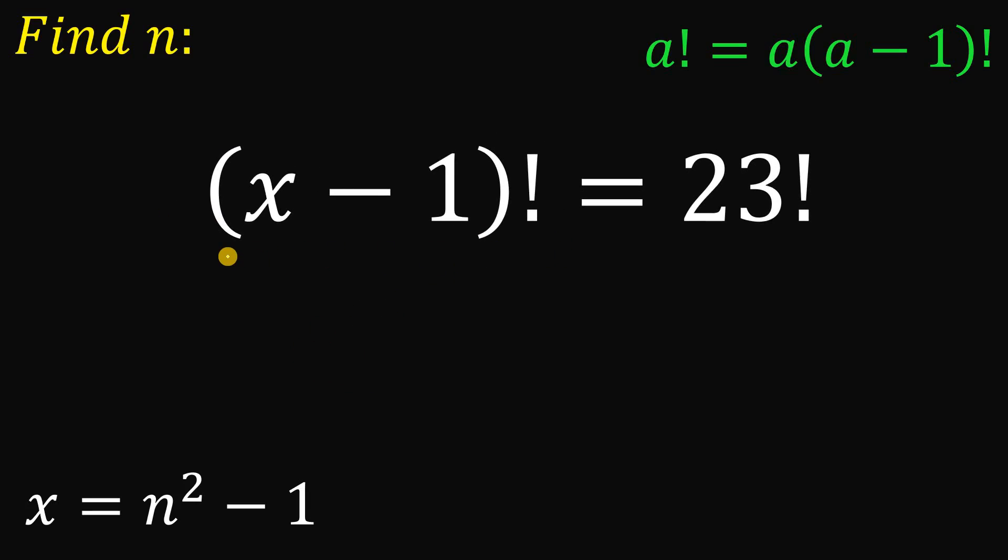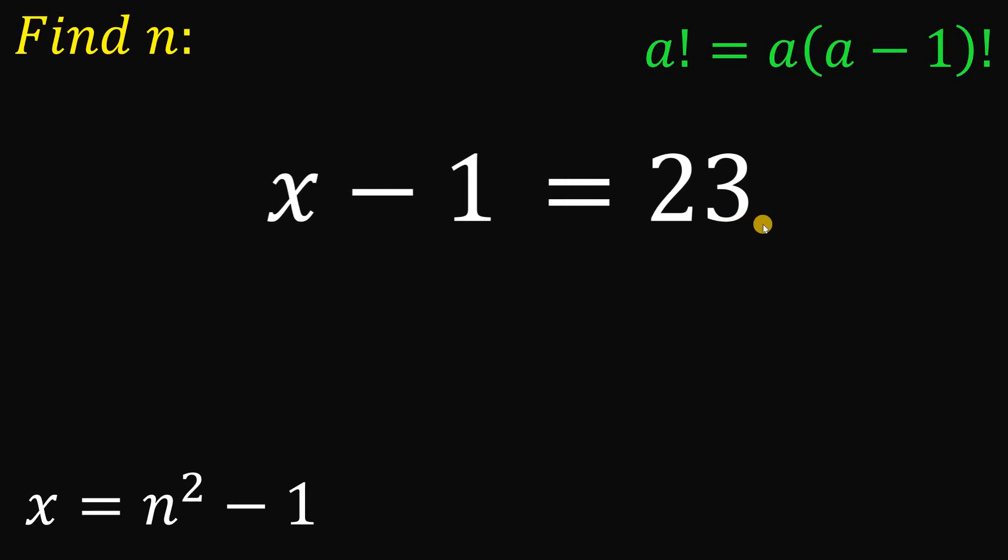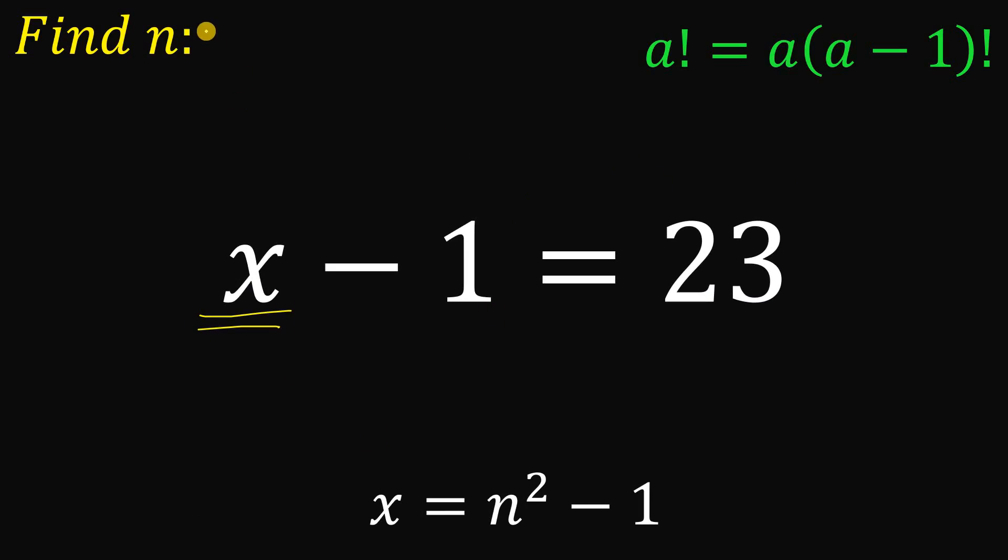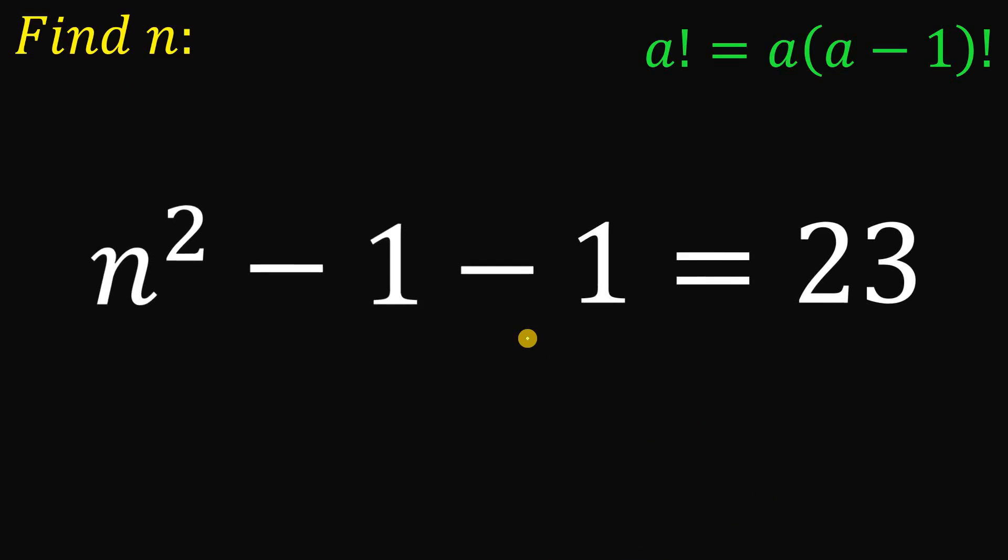Now, on the left side, we have x minus 1 factorial. On the right side, we have 23 factorial. So we can say if we disregard this factorial symbol, x minus 1 equals 23. And now take note, we don't care about the value of x. But what we care about is the value of n because we want the value of n. So let's replace this x by its value n squared minus 1.